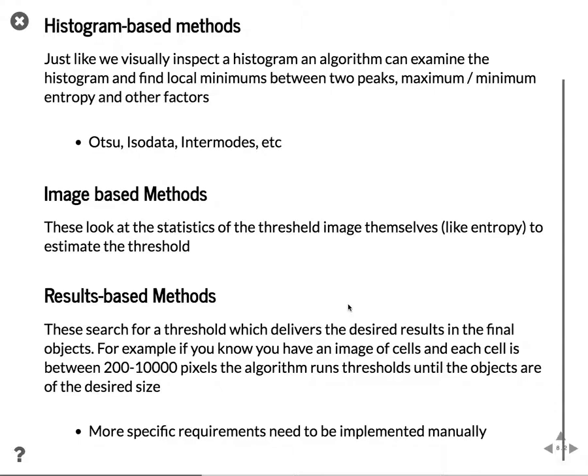The final kind of method is this results-based approach, where you search for a threshold which delivers the desired results in the final image. This can be used when you know, for example, that the size of your cells are between 200 and 10,000 pixels, and you iteratively go through until you find objects of that size. This can also be driven by a ground truth where you optimize the area under the ROC curve, the true positive rate, F1 score, or any number of these metrics.